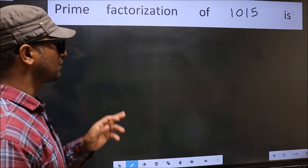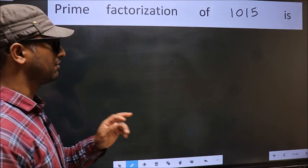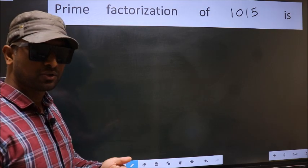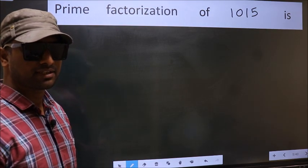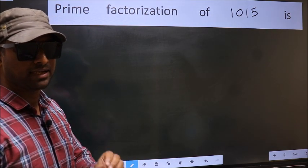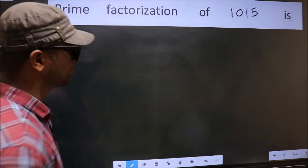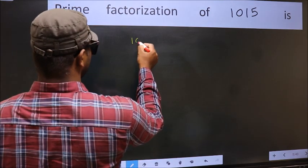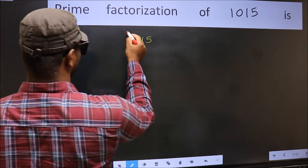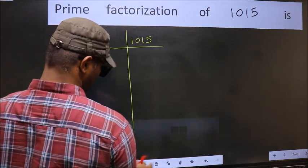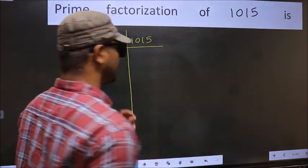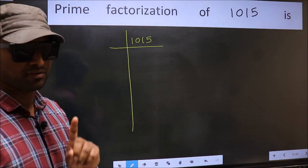Prime factorization of 1015. To do the prime factorization, first we should frame it in this way. 1015. This is your step 1.